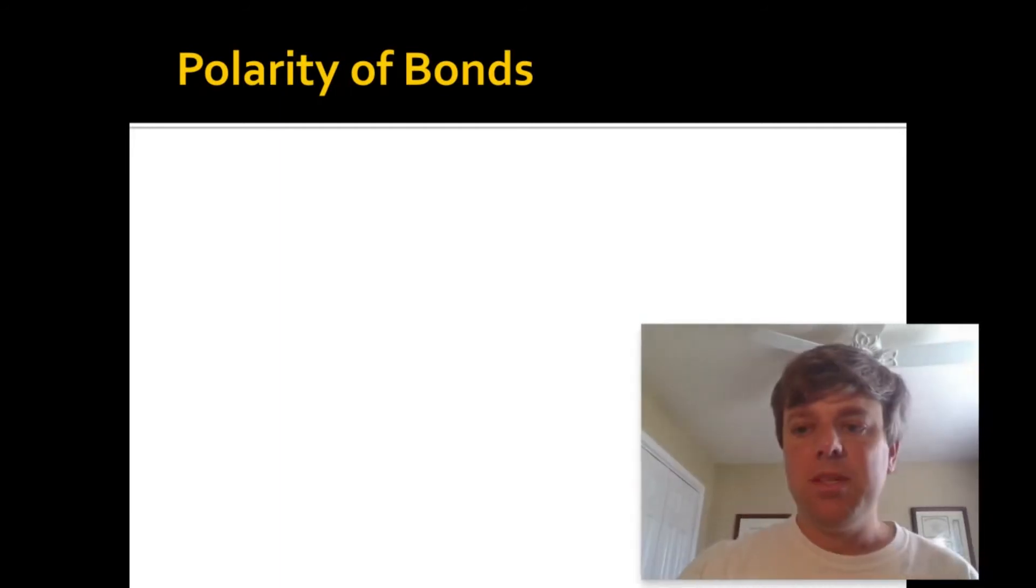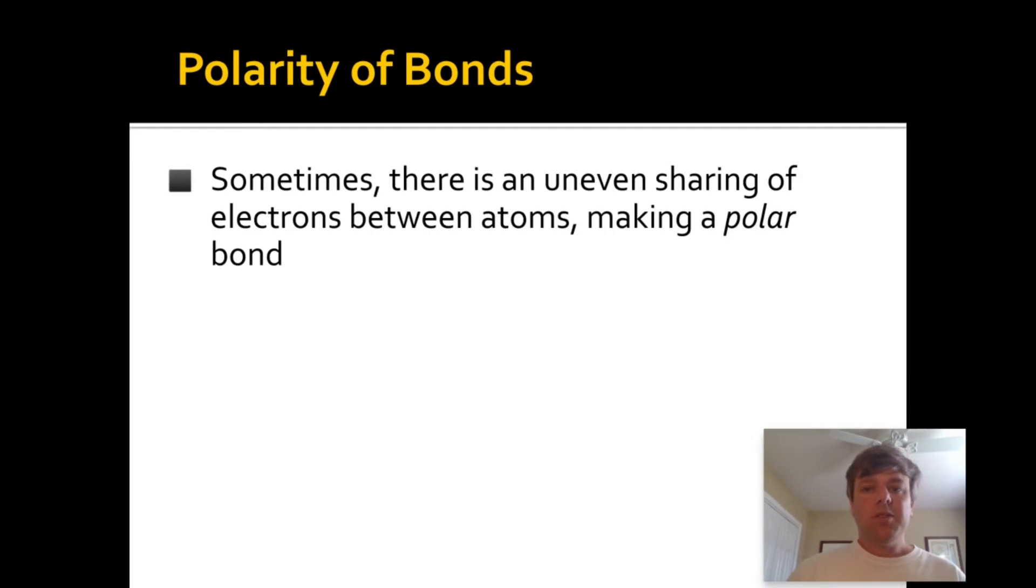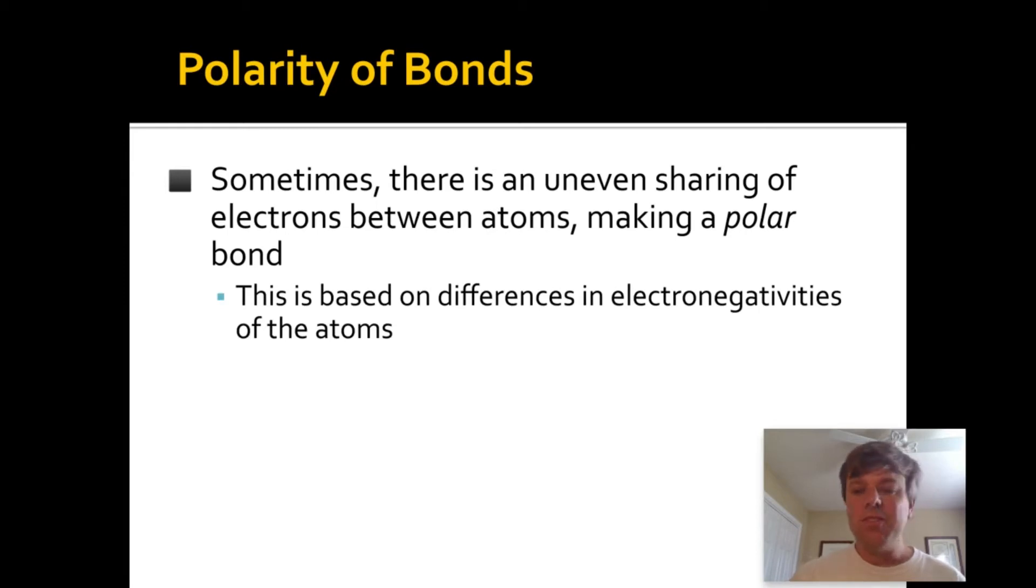So, we're going to talk a little bit about polarity. Sometimes there's an uneven sharing of electrons between atoms, which makes a polar bond, based off of differences in electronegativities. And you may remember that fluorine is the most electronegative element, and francium is the least electronegative. It's one of our periodic trends we learned a long time ago.